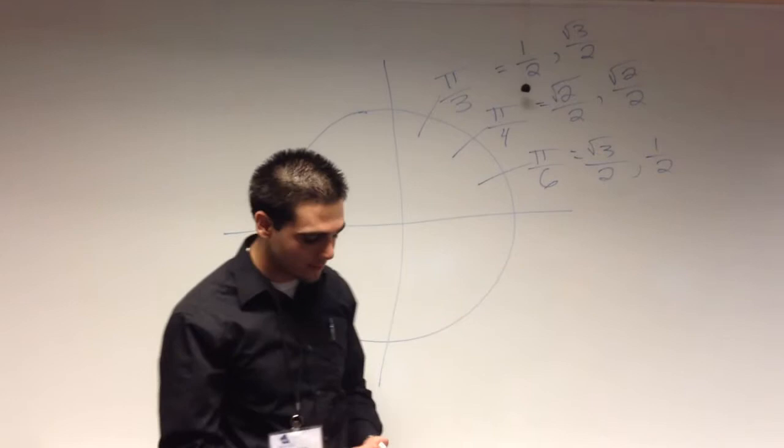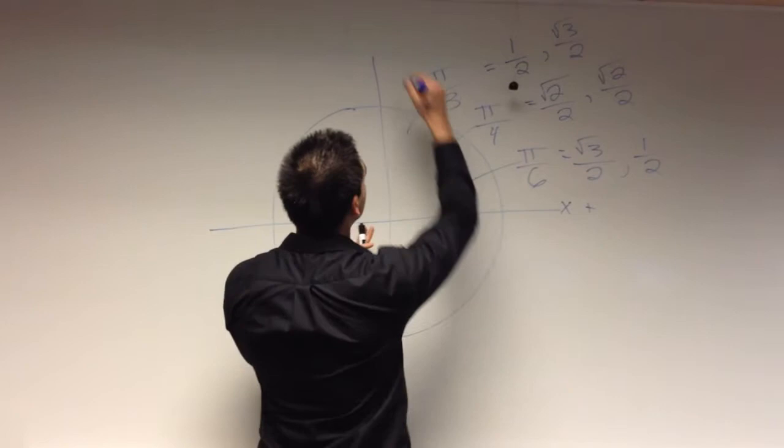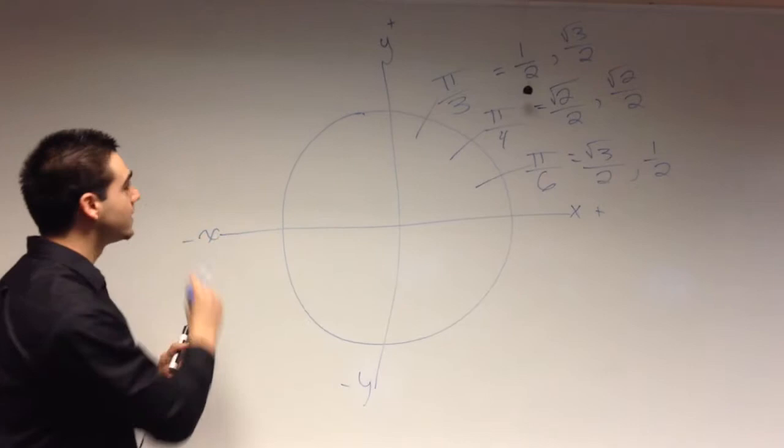And then you know that on this side, x is positive. And on this side, y is positive. And on this side, y is negative. And x is negative, right.